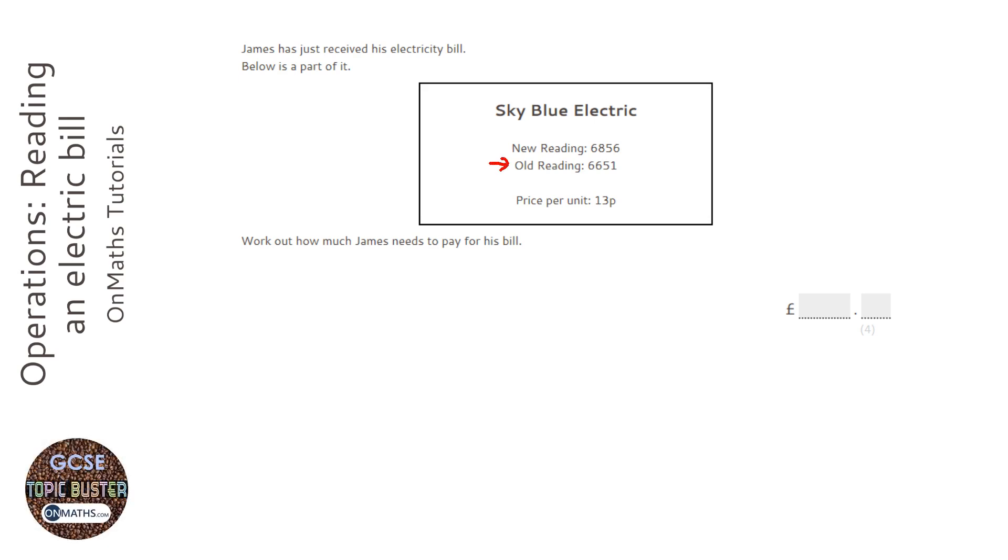The old reading is where the meter started, so it started at 6651, and the new reading is where it ended. So the first thing we've got to do with this question is figure out how many units were used.